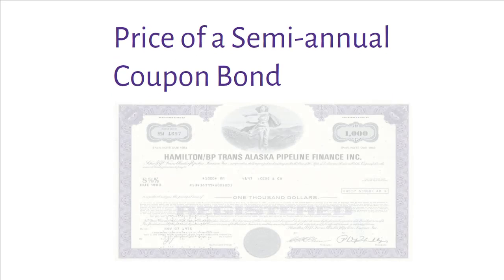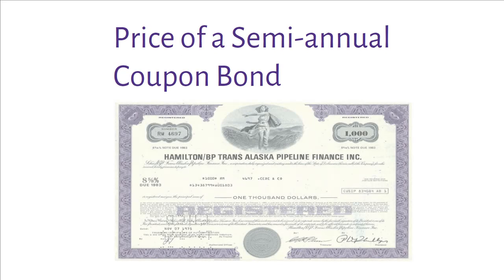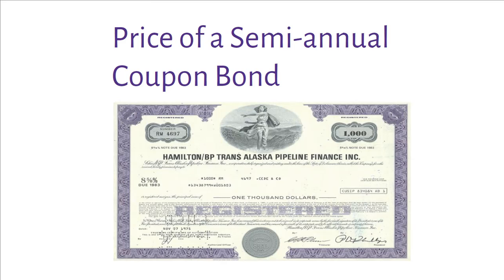For a semiannual bond, the coupon payments are made every six months or semiannually. When calculating the current market price of a semiannual bond, we need to make three adjustments.